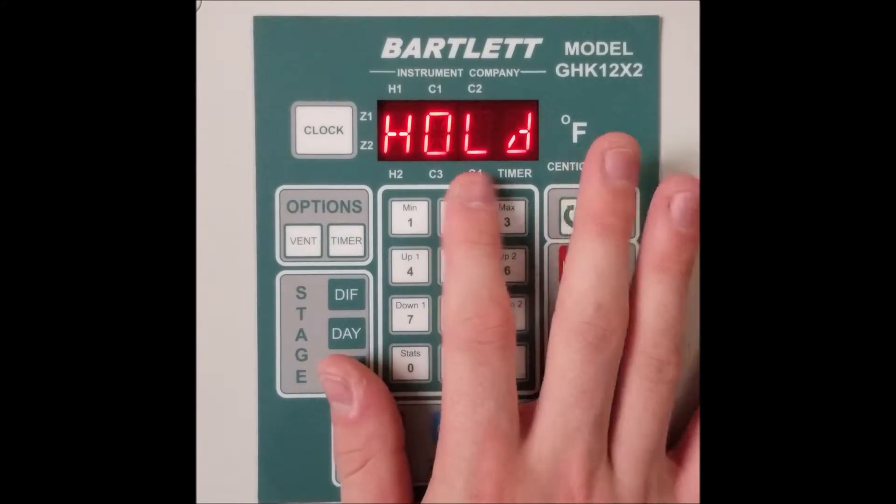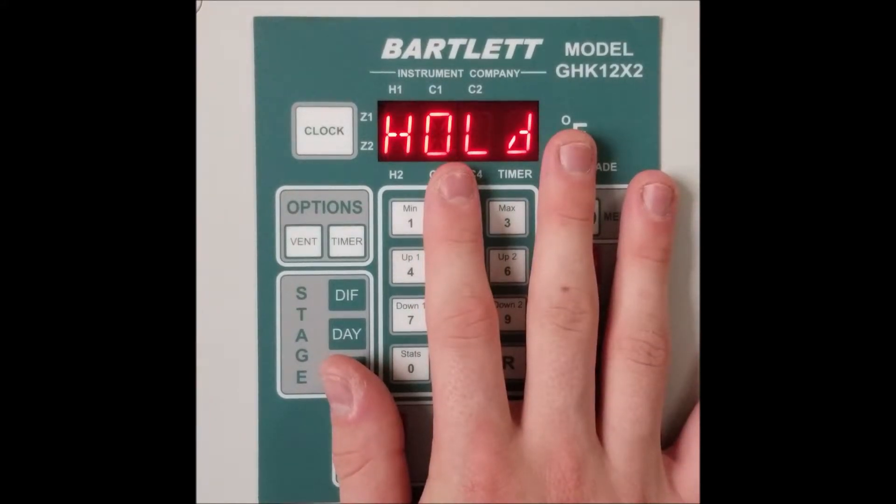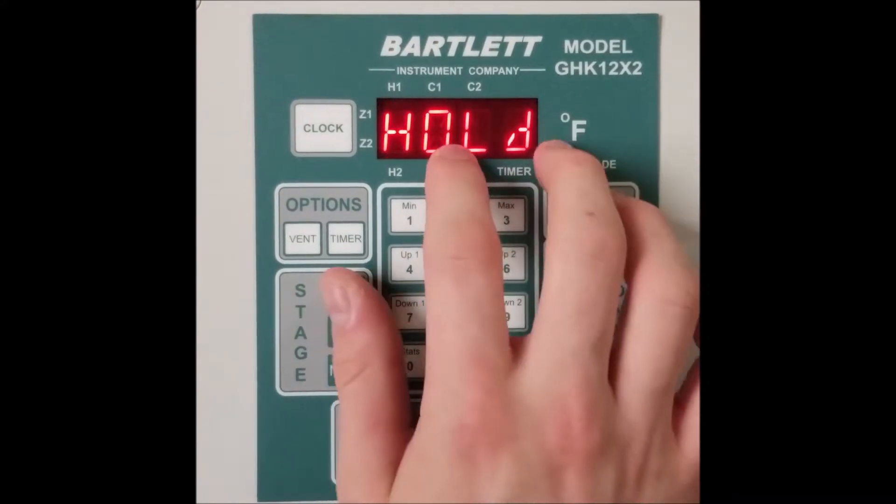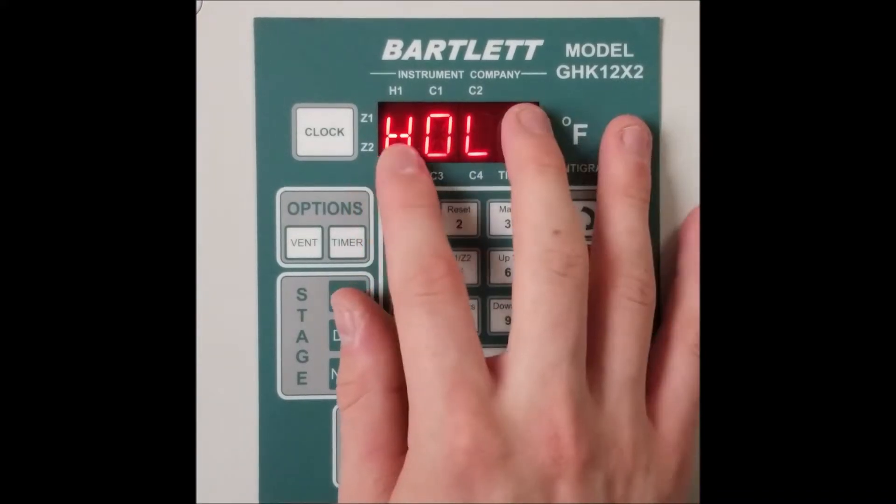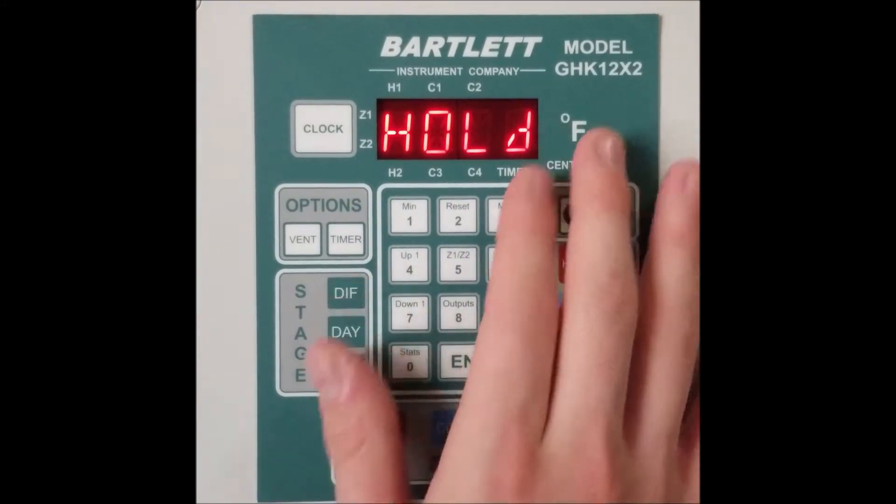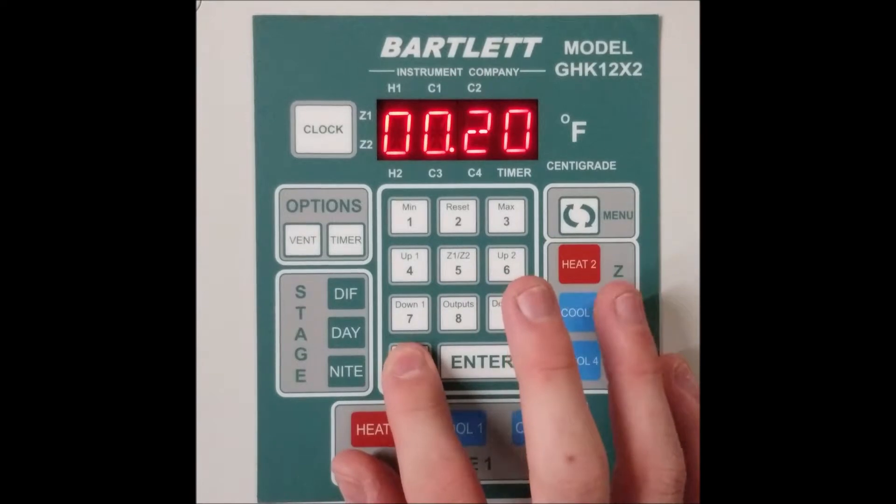Now it asks us for a hold time. Simply enter how long you want the appliance to be active for. So for example, if you want the timer to be active from 3 p.m. to 5 p.m., you'd enter 2 for 2 hours.